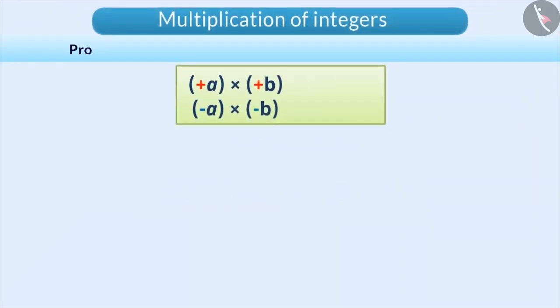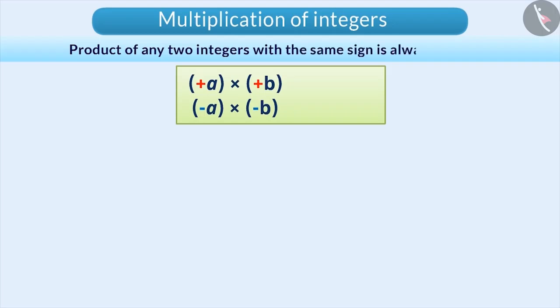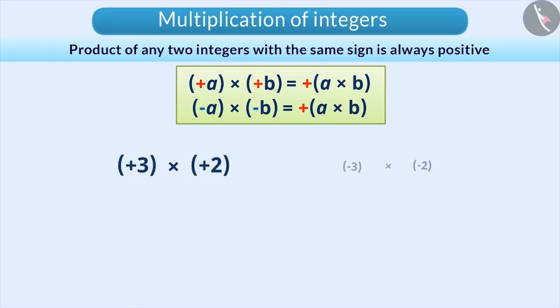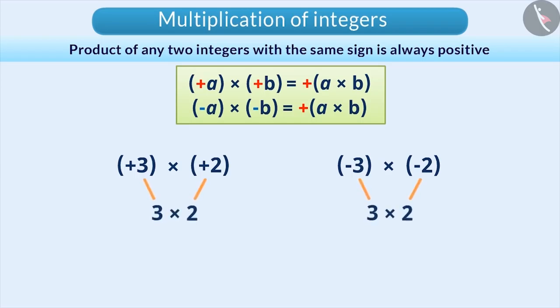Therefore, we can say that the product of any two integers with the same sign is always positive. In general, to find the product of integers with the same signs, we will multiply them ignoring the sign and add a plus sign to the result.